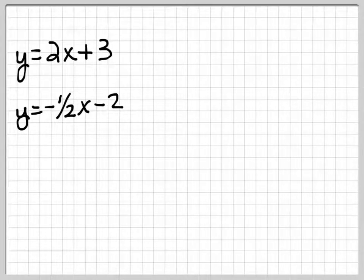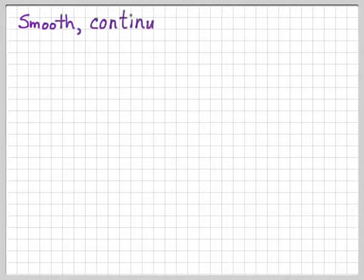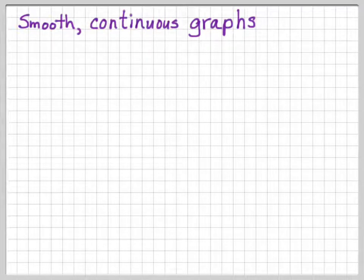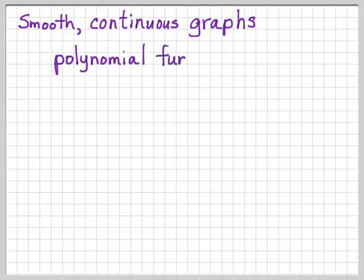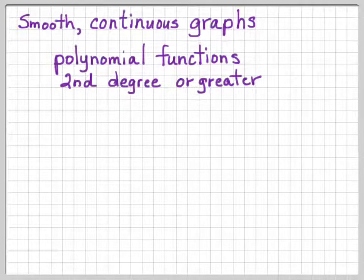We want to talk about polynomial functions, which are going to have little twists and turns in them, and what happens at the far left and the far right of the graph. Polynomial functions have smooth, continuous graphs. A polynomial function is a second degree or greater function — x squared, x cubed, x to the fourth — second degree or greater.